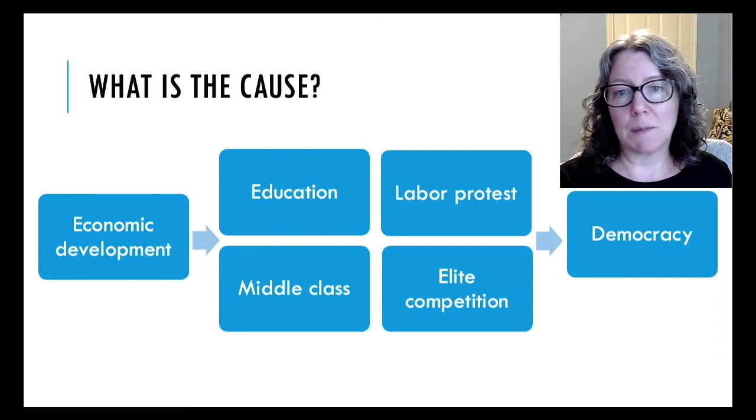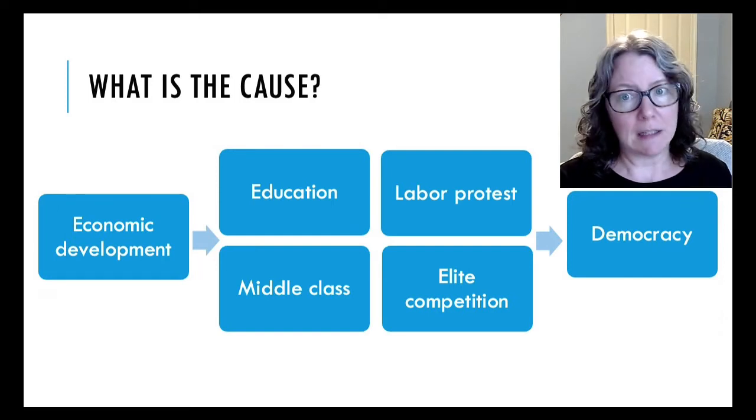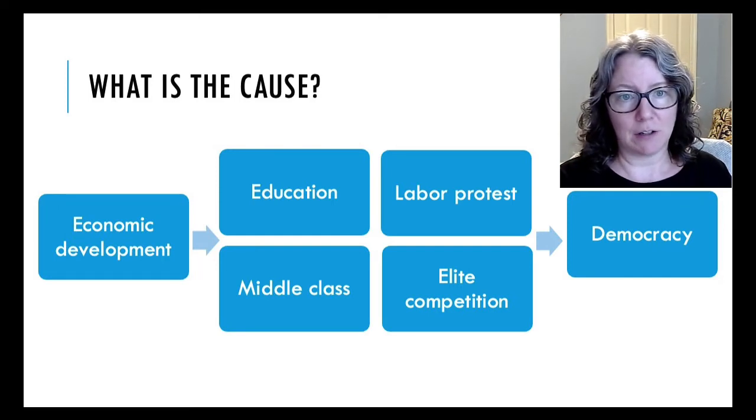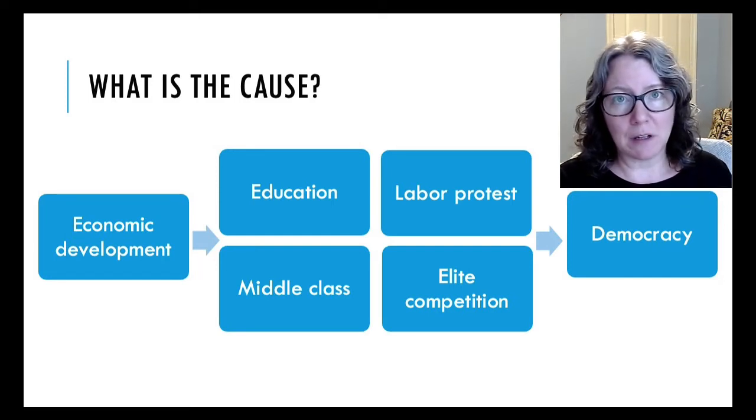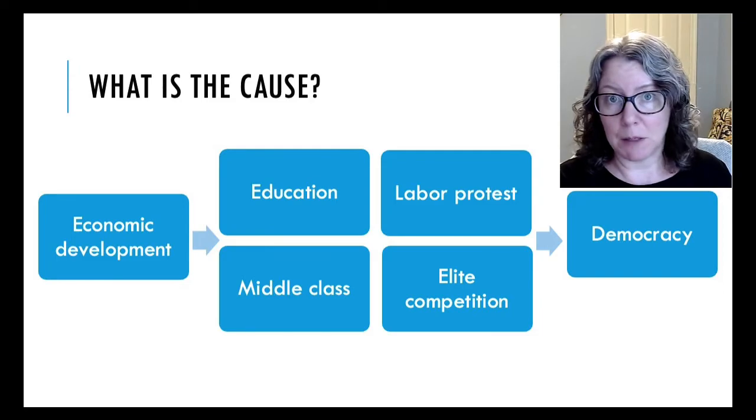Because it can be difficult to separate variables like education from economic power, or to come up with a complete list of all possible explanations for why one country might become democratic. So in political science, we actually often don't prove causality, but rule out alternatives.